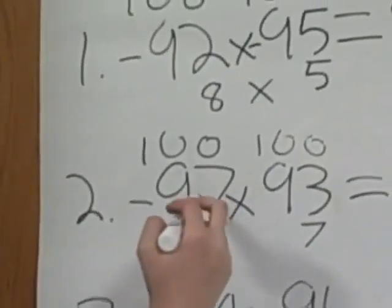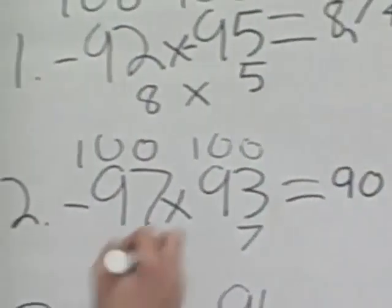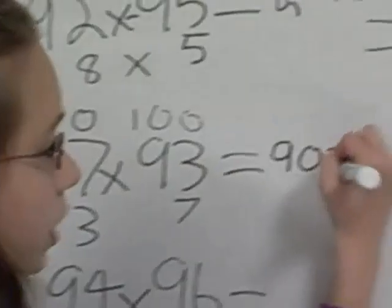93 minus 3 or 97 minus 7 is 90. 3 times 7 is 21.